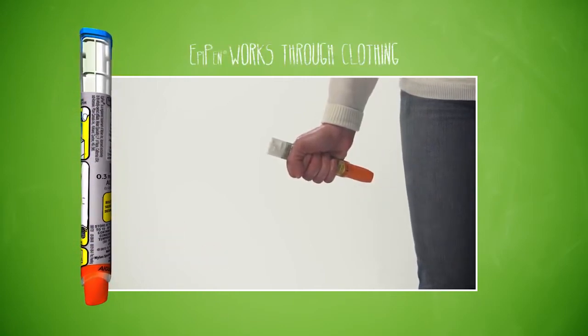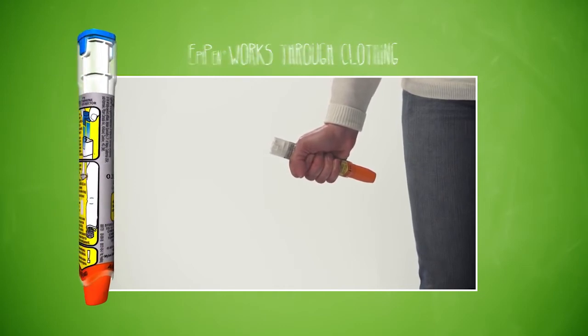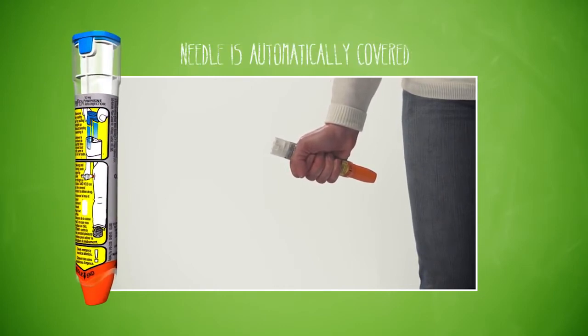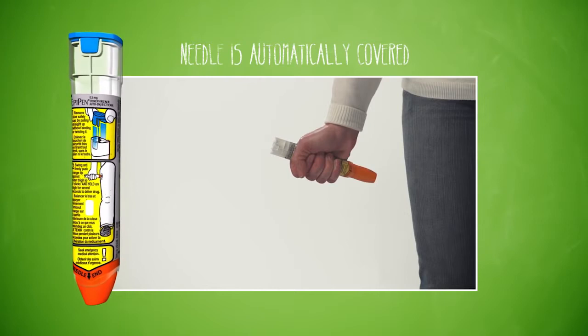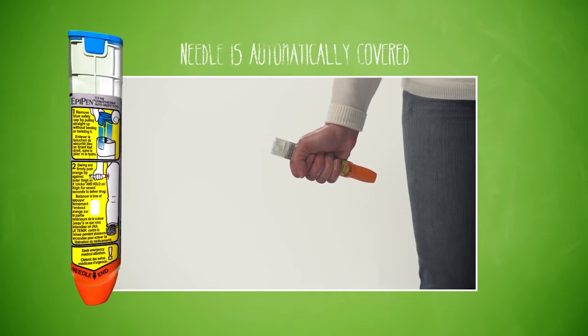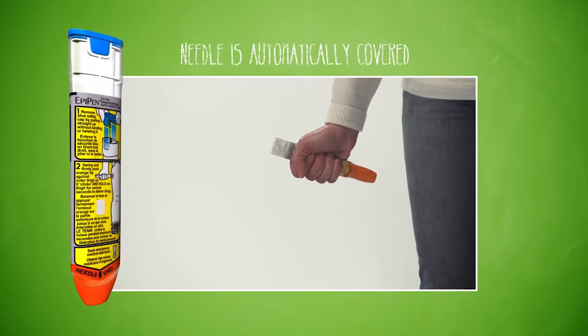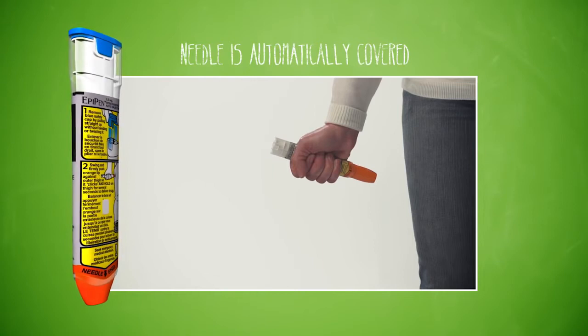EpiPen will work through clothing if necessary. After EpiPen is used, the orange needle cover will automatically extend to cover the needle. This safely covers the needle as the auto-injector is pulled away from your thigh.